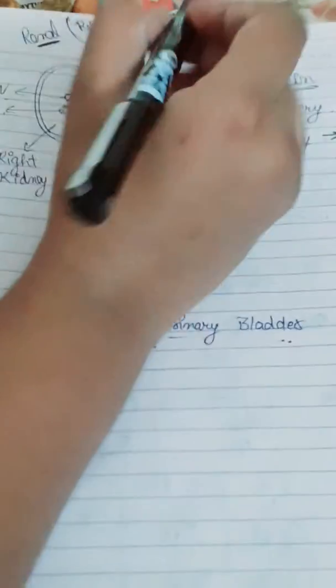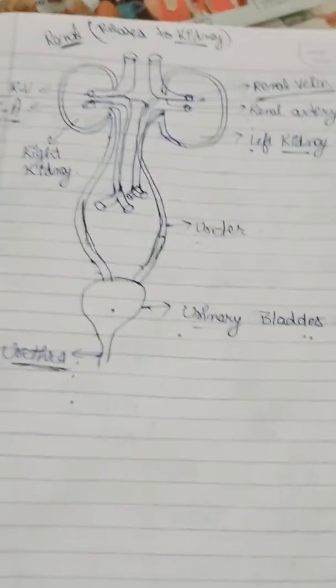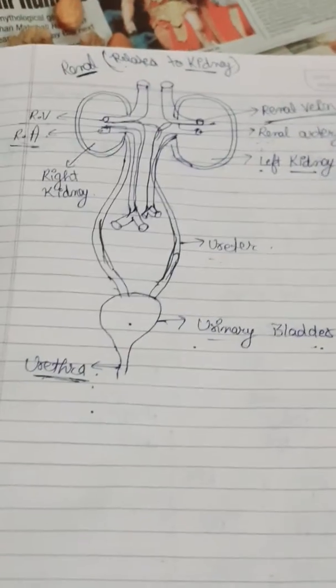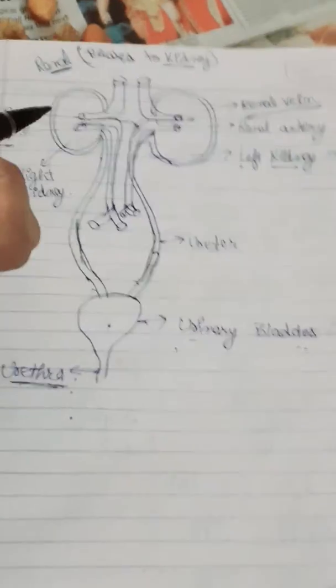The word 'renal' is always related to the kidney — wherever you see the word renal, it refers to the kidney, just as the word 'cardiac' is related to the heart. The renal vein is also known as kidney vein, and the renal artery is also known as kidney artery.